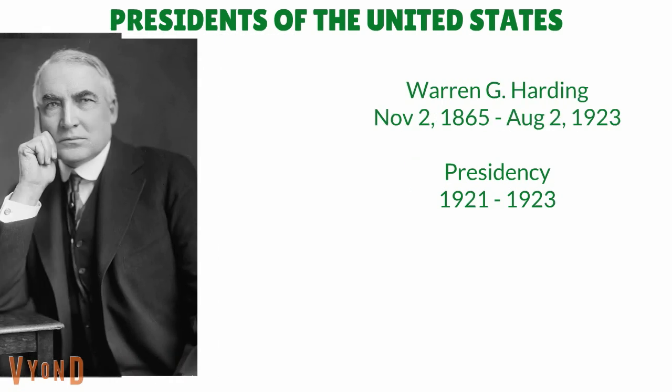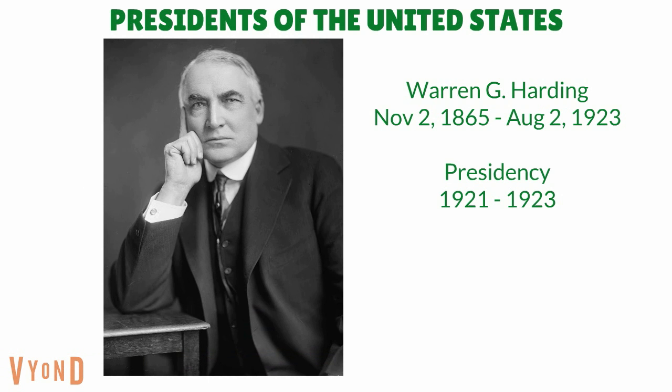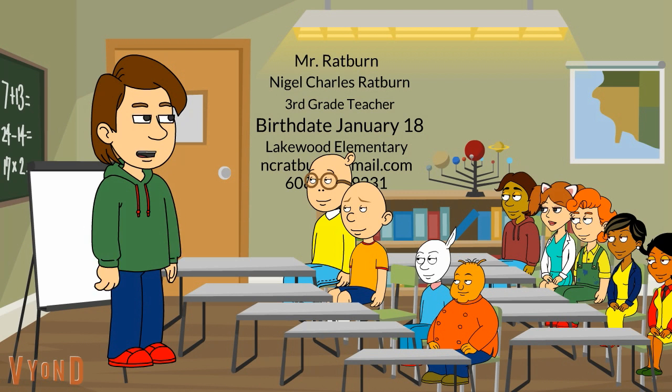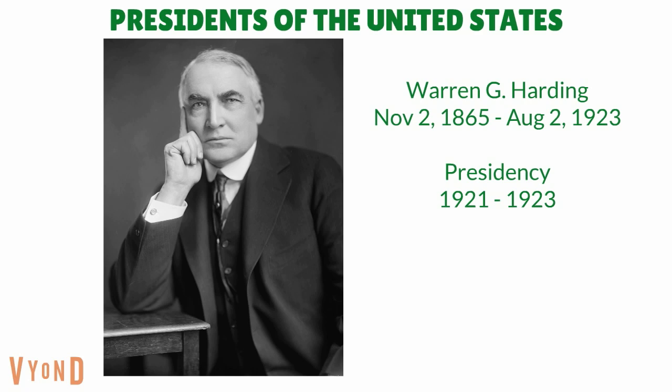Warren G. Harding was our twenty-ninth president of the United States. He was born on November 2nd, 1865. He was a president from 1921 to 1923. Why was he president from 1921 to 1923? In July or August 1923, Harding suffered a massive heart attack. Then, on August 2nd, 1923, he died. He was our sixth president to die in office, and our first president since Zachary Taylor to die in office of natural causes.